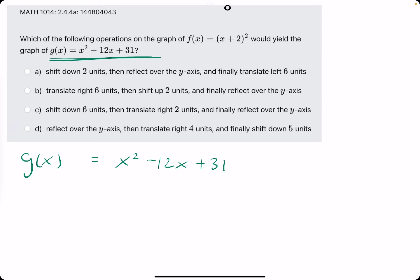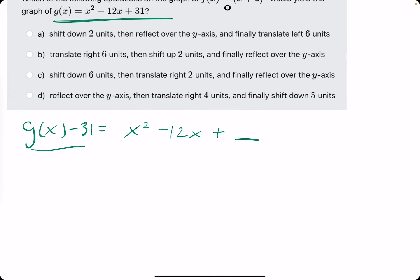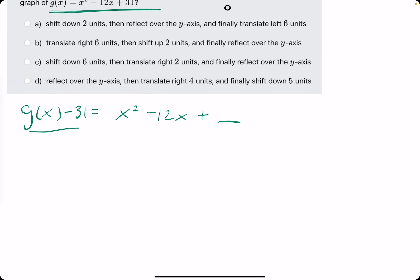Right away I'm just going to subtract the 31 on both sides, so we have it minus 31 on the left side. And then simultaneously I'm going to go ahead and add that blank there for the part of completing the square. To complete the square or to find what value goes here, we take this number negative 12, we cut it in half, so divide it by 2, and then we square it.